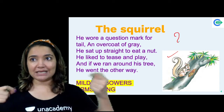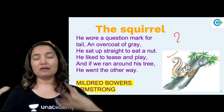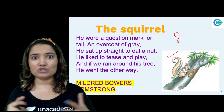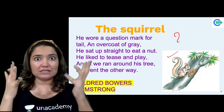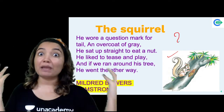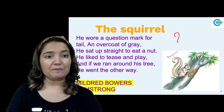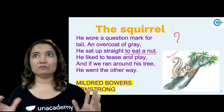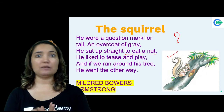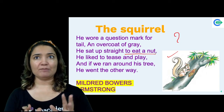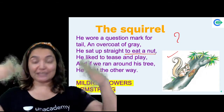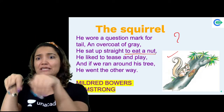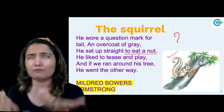Then 'an overcoat of grey' — basically if you look at a squirrel's color, it's grayish, with white lines on it. So it's like the squirrel is wearing a gray overcoat. Next, 'he sat up straight to eat a nut' — if you observe a squirrel, it always sits very straight when eating nuts. As I'm teaching you, I can just visualize it in my mind.